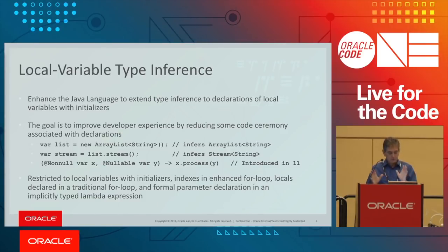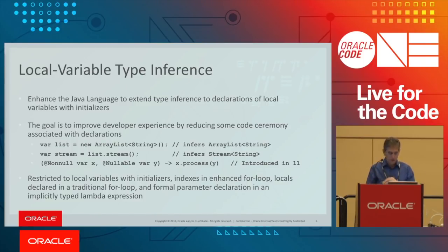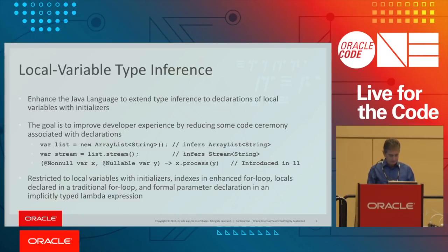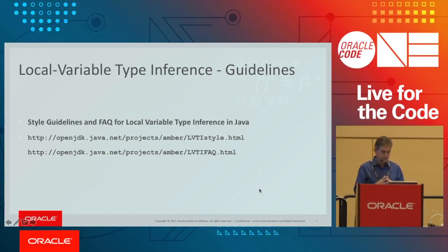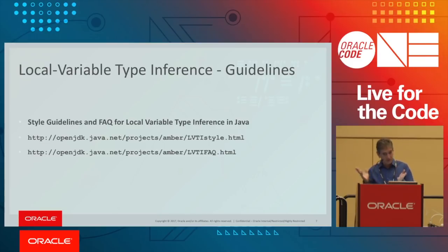To summarize, var is restricted to: local variables with initializers, indexes of enhanced for loops, locals declared in a traditional for loop, and formal parameter declarations of lambda expressions. In addition to normal documentation, we've also provided a style guideline on where to use var, where not to use it, and an FAQ. These are available online.